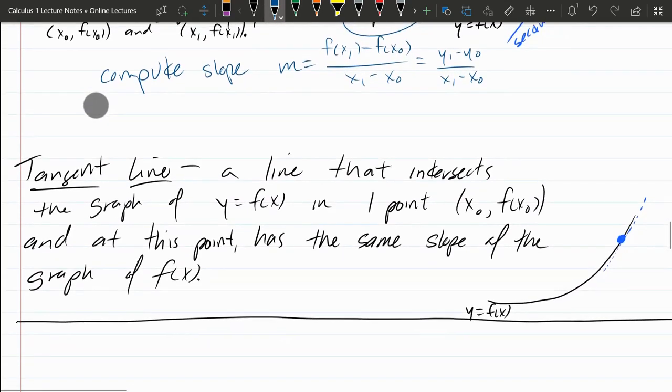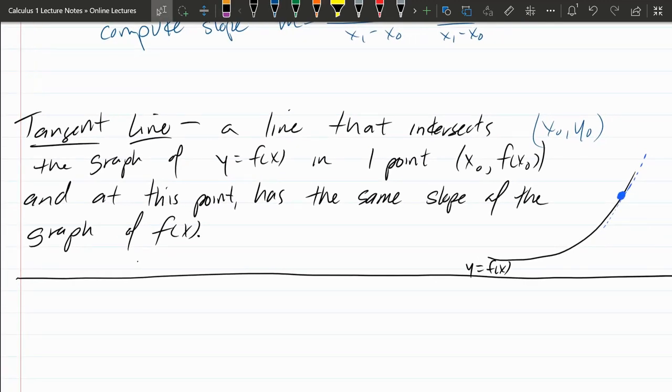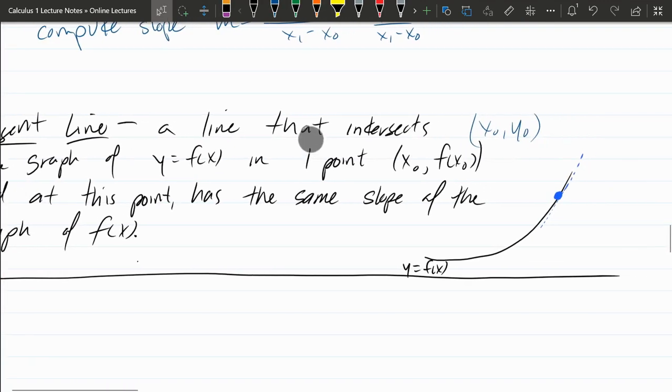Now we'll talk about tangent lines. Tangent lines are similar. They're a line that intersects a curve. But this time, it does so in one point. And this point, we only have one point. So we'll use x0 f of x0. Of course, you could think of this as x0 y0. And we also need to compute the slope. But we do so in a different way.